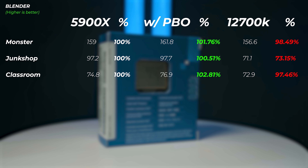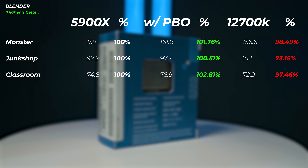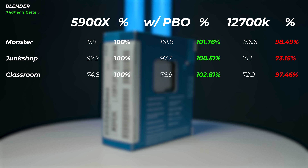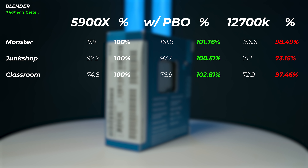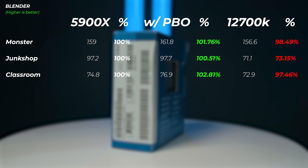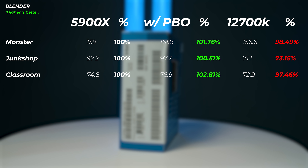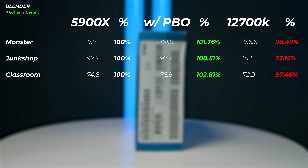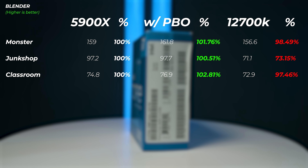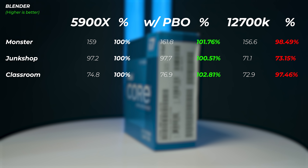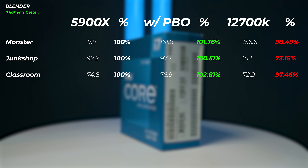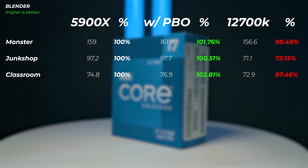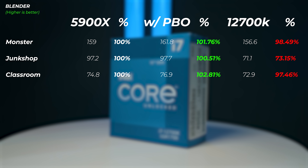Looking at Blender 3D rendering performance, the 5900X with PBO gains 1.7% in the Monster scene, 0.5% in the Junk Shop scene, and 2.8% in the Glass Room scene. The 12700K is about 1.5% slower in Monster, 27% slower in Junk Shop, and 2.5% slower in the Classroom scene. Ryzen definitely wins in 3D rendering performance.